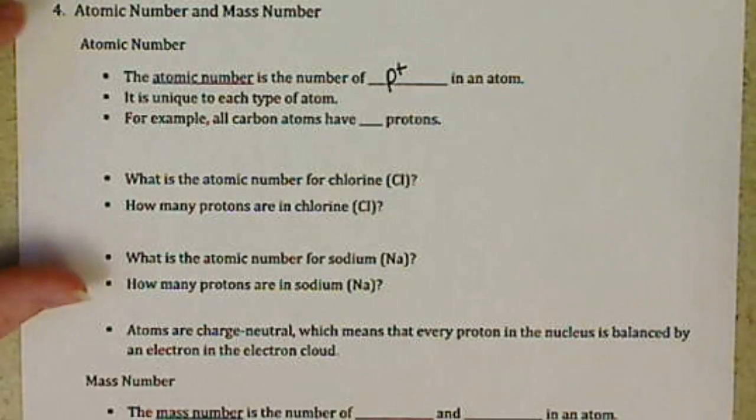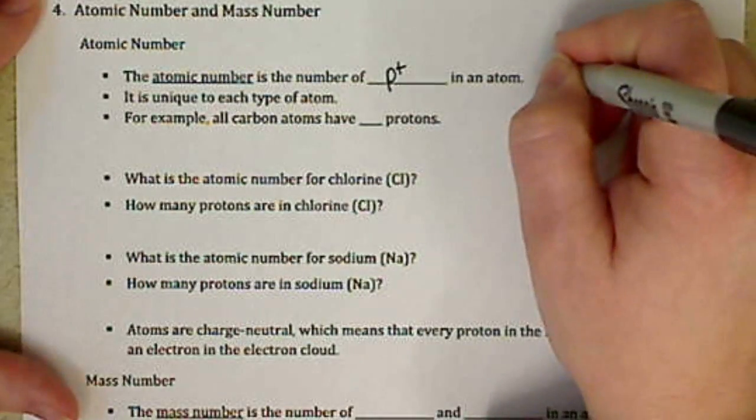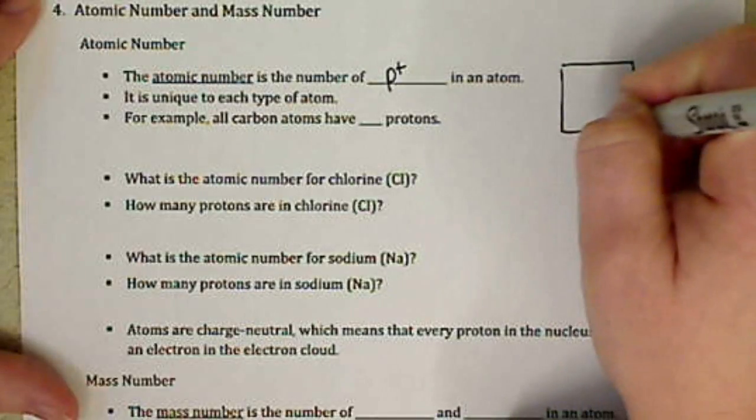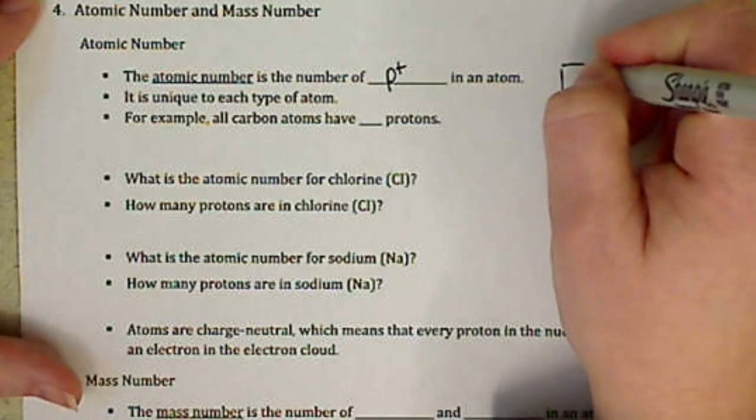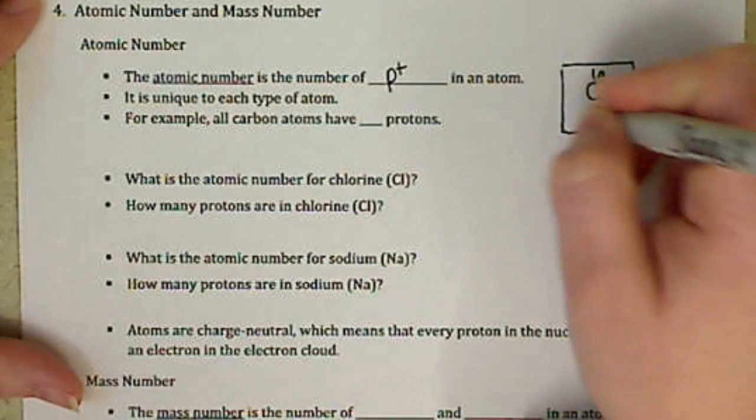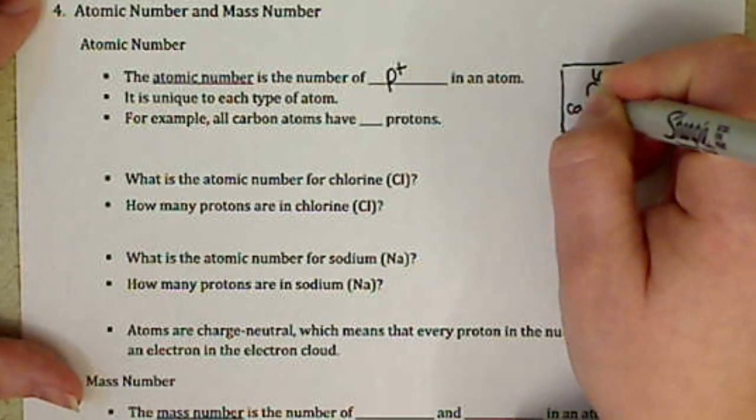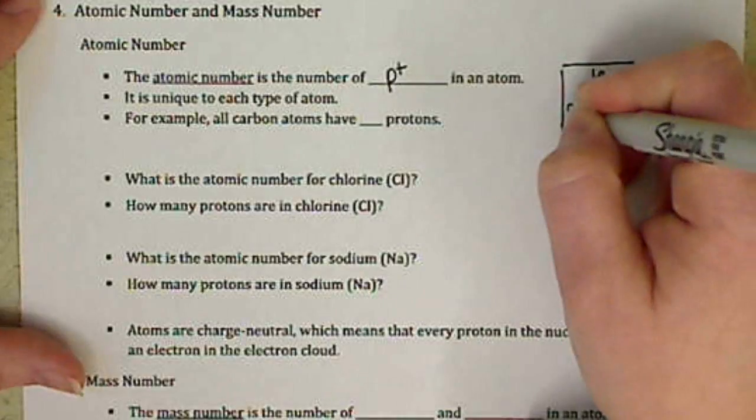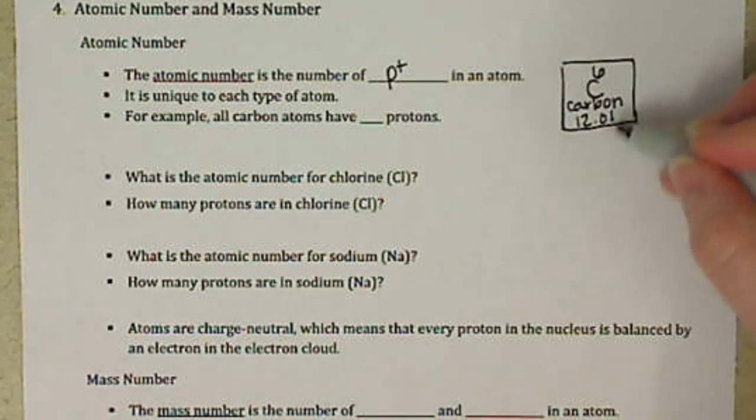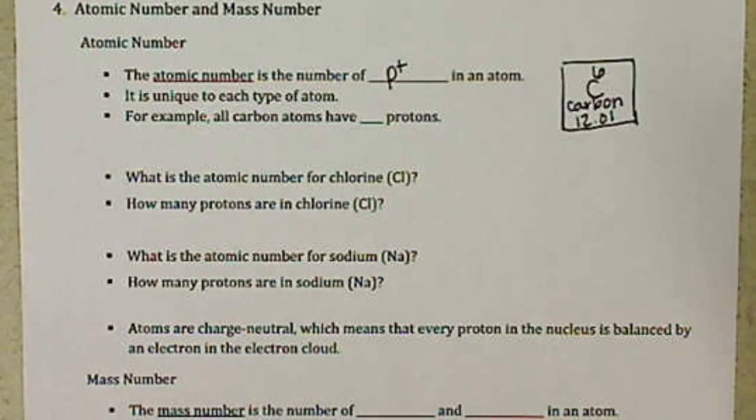So if we look at the symbol of carbon on a periodic table, they'll have a number above, then we'll have the symbol, then generally the name, and then some number underneath that's not a whole number, and we'll talk about that later.